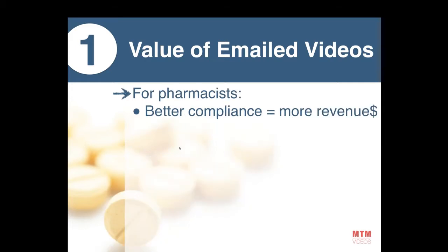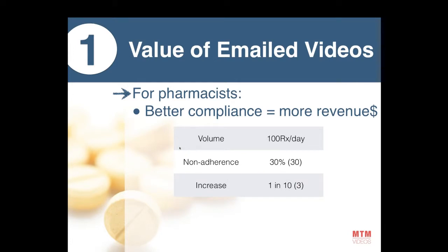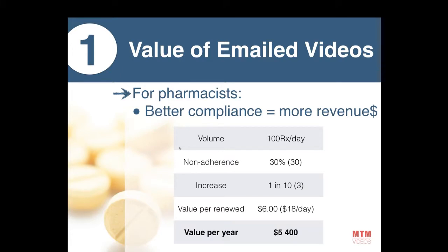For the pharmacist, better compliance also means more revenues. Here's an example with a small pharmacy that has 100 prescriptions a day. If 30% of those patients — 30 prescriptions — will not be compliant and won't renew monthly, but with the videos you increase that by 1 out of 10, that brings 3 more RX every day. At $6 per prescription, that's a minimum of $5,400. These are conservative numbers — just 3 more people a day can bring additional revenue to your pharmacy.